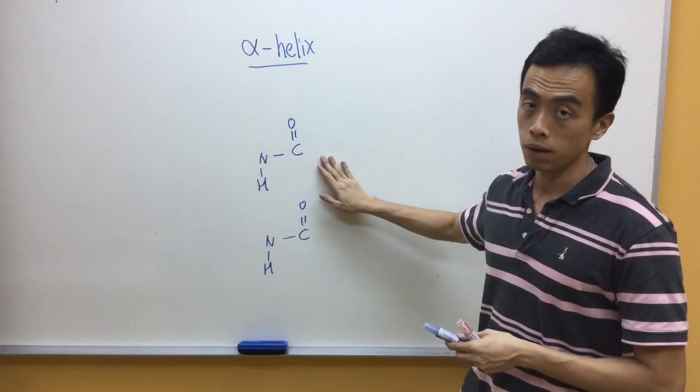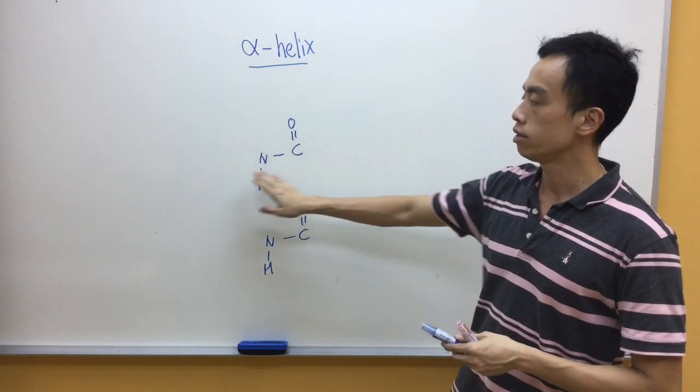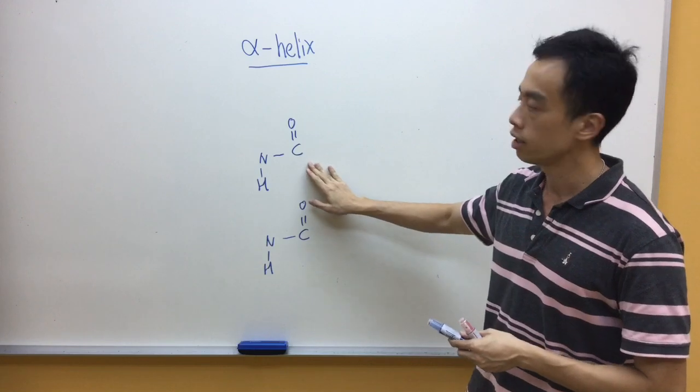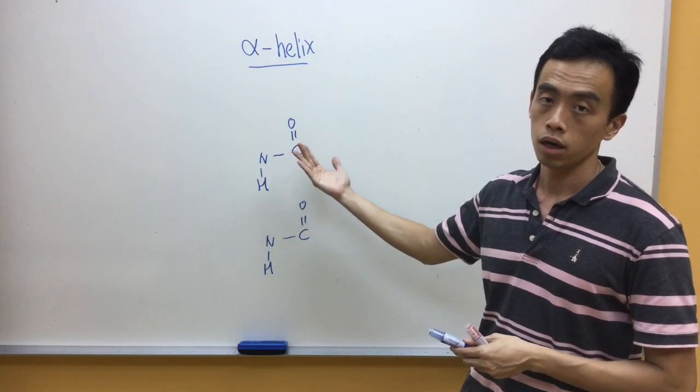You'll notice in this case, the peptide bond, instead of drawing it as a C double bond O on the left-hand side and H on the right-hand side, we draw in the reverse way.